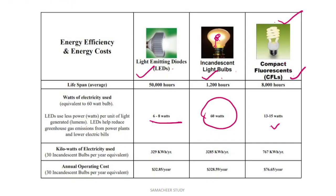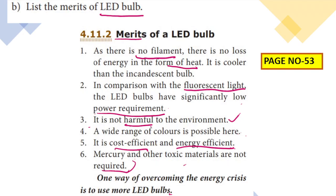In comparison with fluorescent light, LED bulbs have a low power requirement. LED diodes use only 6 to 8 watts to produce the equivalent light effect, whereas incandescent and compact fluorescent bulbs consume much more power. LED bulbs are not harmful to the environment, unlike other bulbs which contain mercury and other toxic materials.